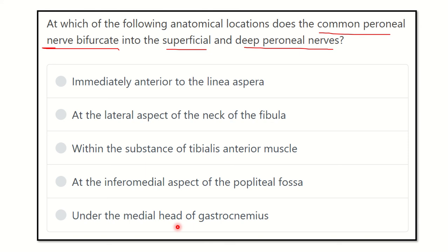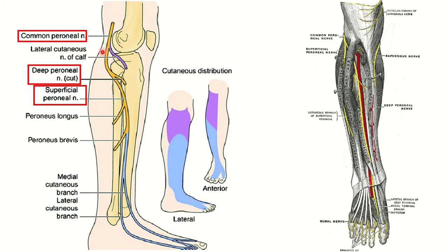In this picture we can see the common peroneal nerve. It arises from the sciatic nerve at the upper part of the popliteal fossa, where the sciatic nerve divides into the common peroneal nerve and the tibial nerve. The common peroneal nerve then descends, and at a certain point it divides into the deep peroneal nerve and the superficial peroneal nerve.